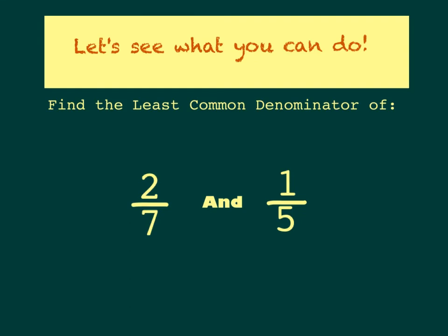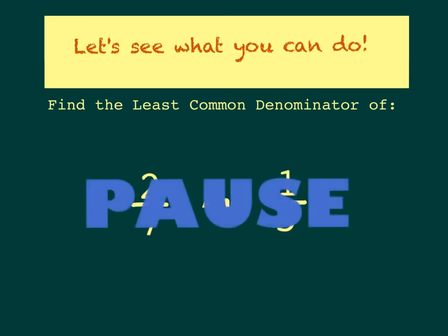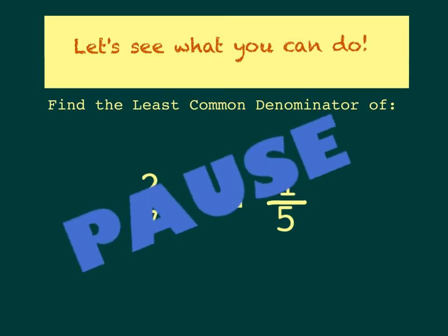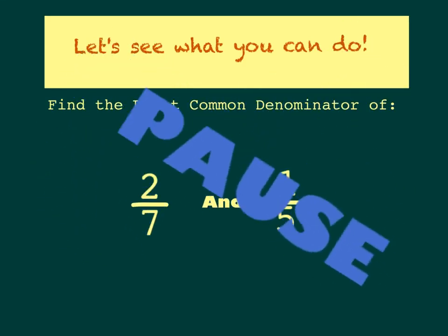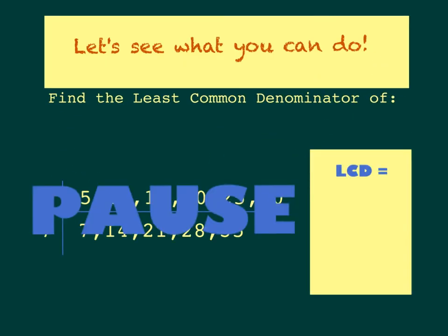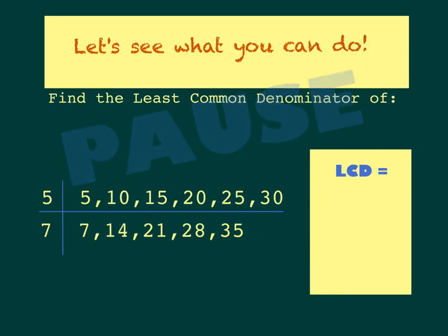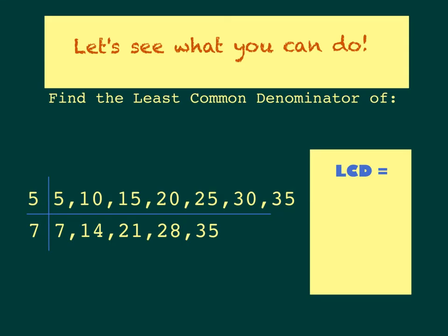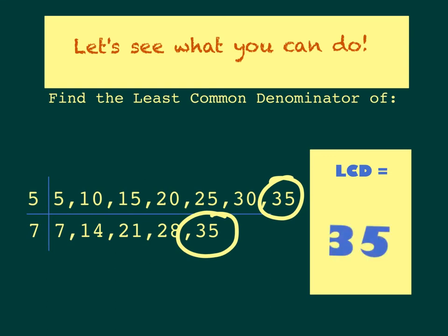Let's try another one. This time I want you to find the least common denominator of the fractions 2 sevenths and 1 fifth. Go ahead and pause the video while you solve this problem. After identifying multiples, the least common multiple between 5 and 7 is 35.